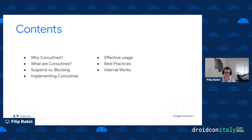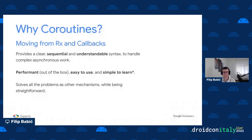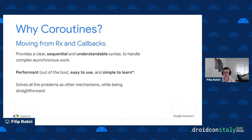If you're thinking about using coroutines and haven't started yet, or you've just recently begun integrating them — perhaps moving away from RxJava or callbacks — coroutines provide a very clear and easy-to-understand syntax. It doesn't require complex operators or callbacks, and handles all asynchronous work in a very performant way out of the box, so you don't have to worry about threading or managing thread pools.